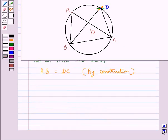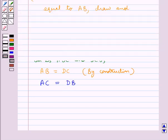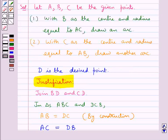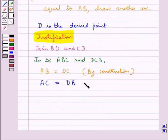Next we have that the side AC of triangle ABC is equal to the side DB of triangle DCB. This is again by construction, since with B as center and radius equal to AC we have drawn an arc.